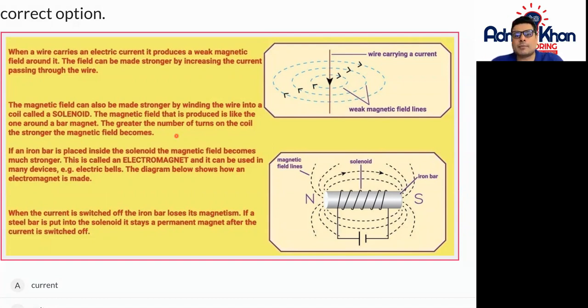If an iron bar is placed inside the solenoid, the magnetic field becomes much stronger. This is called an electromagnet and it can be used in many devices, such as electric bells for example, or it could be a doorbell in your house, electric doorbell.